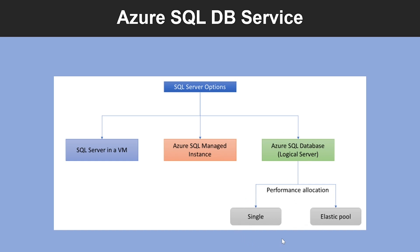Single Database represents a fully managed isolated database. You might use this option if you have a modern cloud application and microservices that need a single reliable data source. Elastic Pool is a collection of single databases which share a set of resources such as CPU or memory, and a single database can be moved into and out of an Elastic Pool.